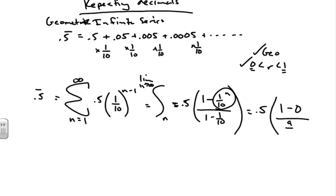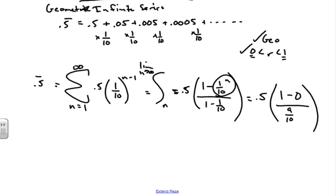We have 1 minus 1 tenth which turns to be 9 tenths. Alright, and now we can simplify this. Over here we have 0.5 times, it would be 10 over 9, and that's going to equal 5 ninths. So 5 ninths, if you put it in a calculator, is 0.5 repeating. Cool, huh?